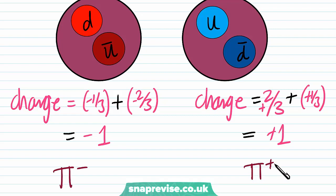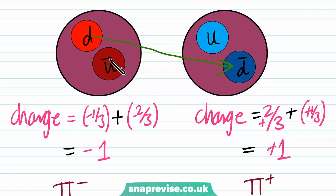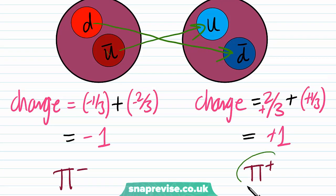Importantly, π+ and π− are each other's particle-antiparticle pair, not simply a meson–anti-meson pair. We can see that each quark in one pion is replaced by its corresponding anti-quark in the other, so a positively charged pion π+ is the anti-particle of the π− meson.